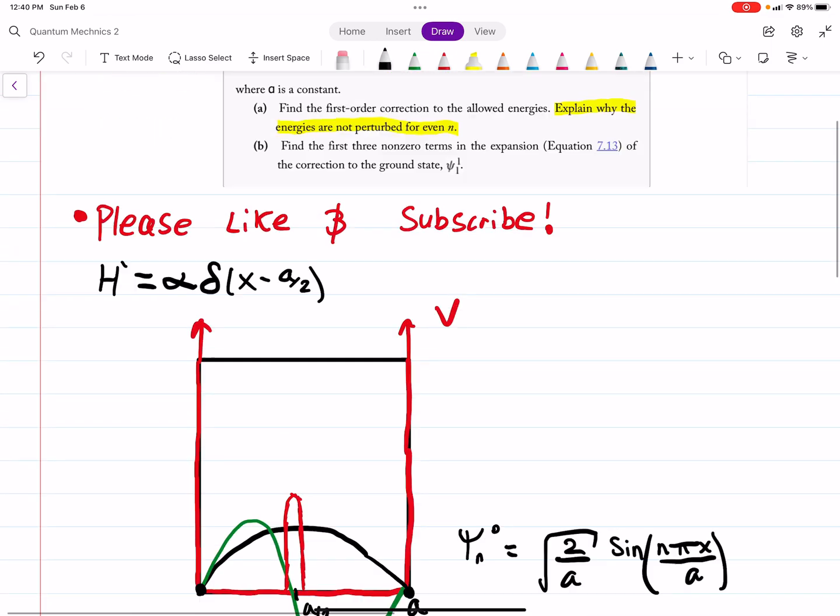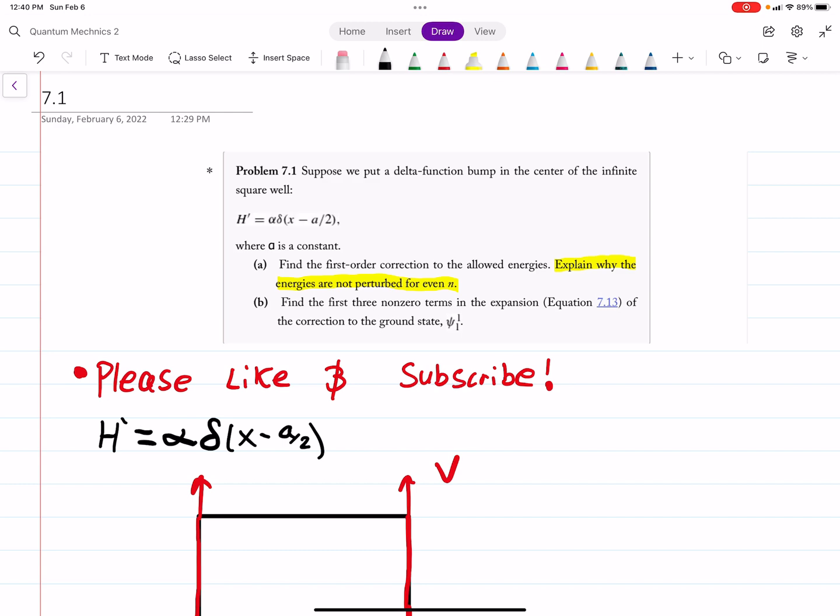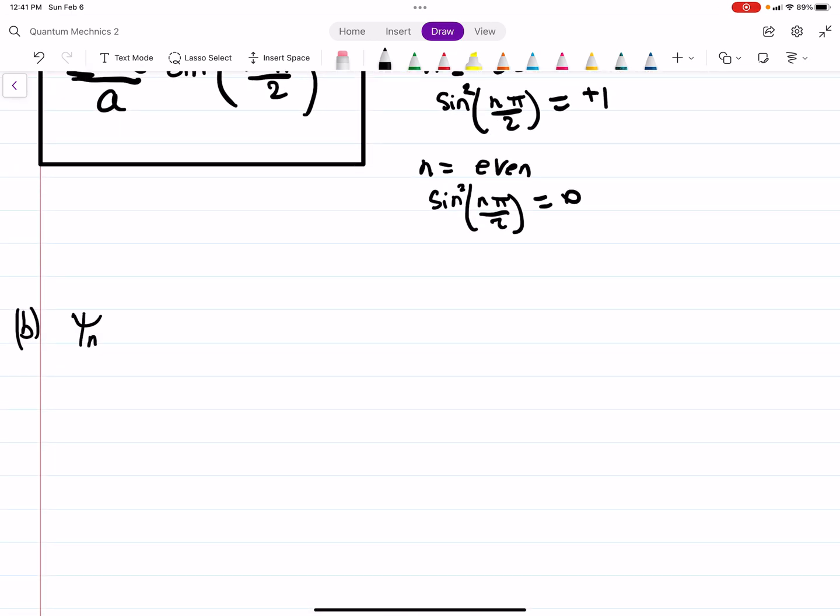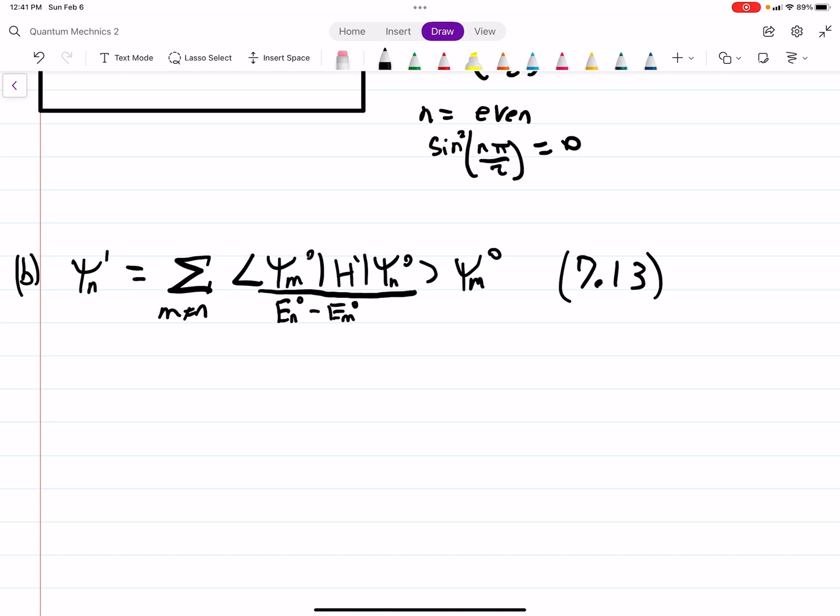And now part B. Find the first three non-zero terms in the expansion 7.13 of the correction of the ground state, psi 1. So the equation we're using, this is to find the correction to our wave function, is the summation such that m does not equal n, and then we have this inner product, and then we're going to divide by e sub n naught minus e sub m 0, and then psi sub n 0. This is equation 7.13 from the book. I haven't derived this on this channel, but for the purpose of studying, I just want to work problems, so I'm just going to go from here.